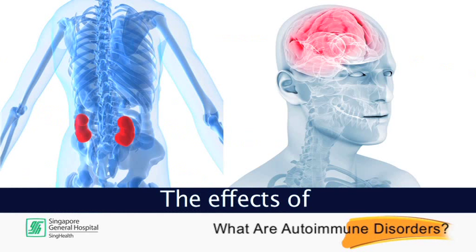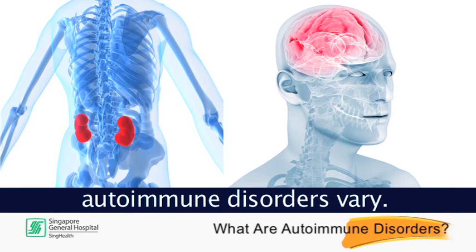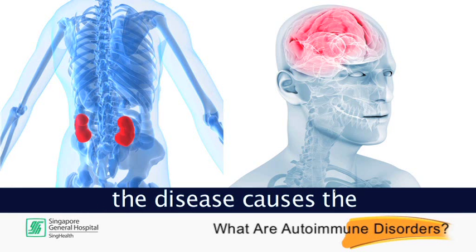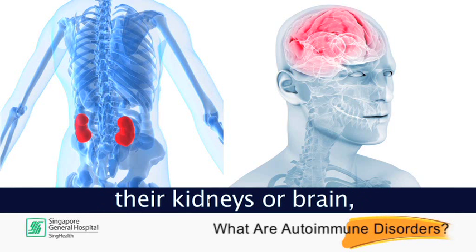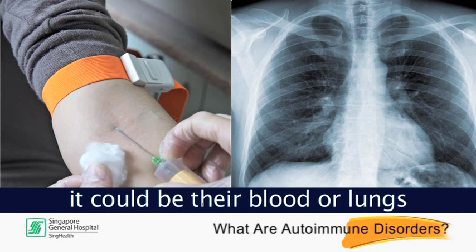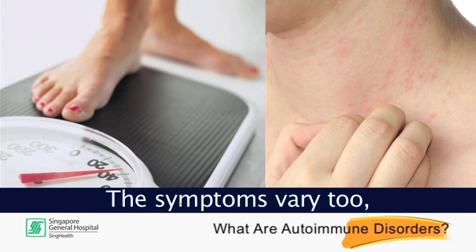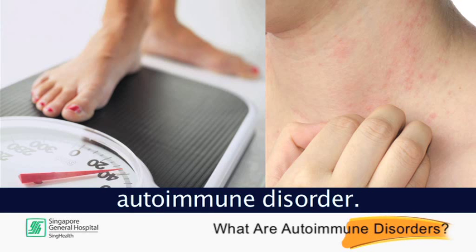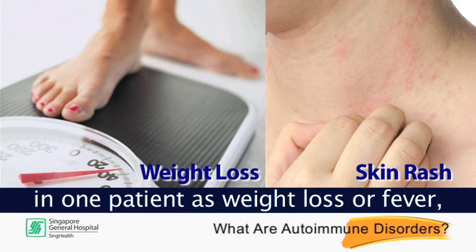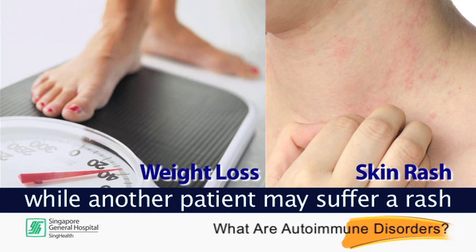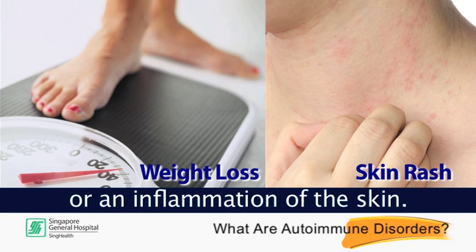The effects of autoimmune diseases vary. For some patients, the disease causes the immune system to attack their kidneys or brain, while in other people it could be their blood or lungs that are affected. The symptoms vary too depending on the type of autoimmune disorder. A disease may manifest itself in one patient as weight loss or fever, while another patient may suffer a rash or an inflammation of the skin.